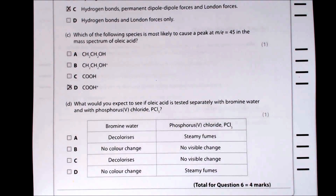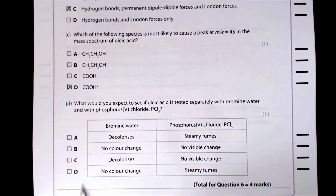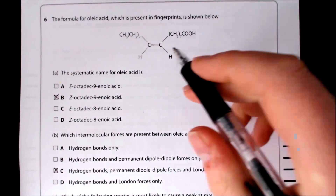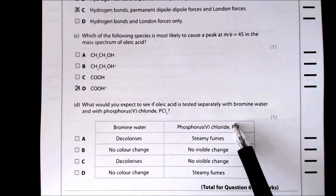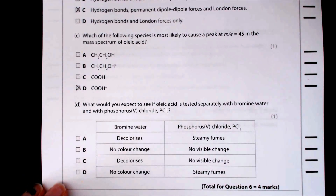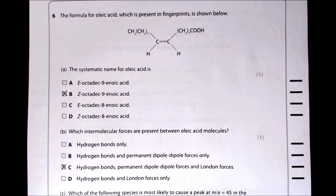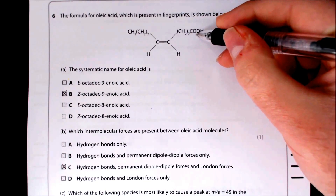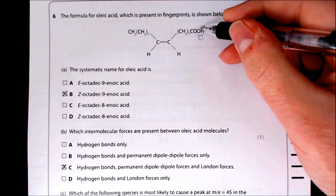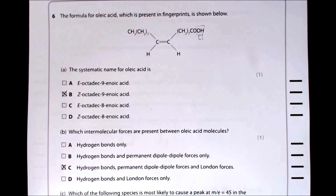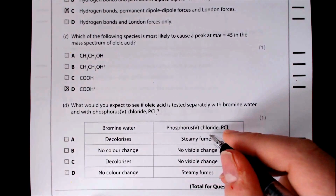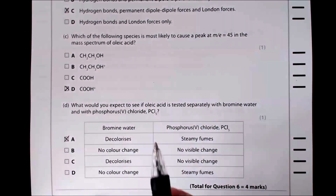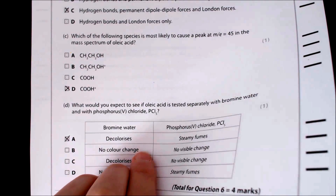Part D: what happens when oleic acid is tested with bromine water and with PCl₅? Oleic acid has a C=C double bond, which decolourises bromine water. PCl₅ reacts with the OH group of the carboxylic acid, replacing it with Cl and producing steamy/misty fumes of HCl. So the observations are bromine decolourised and steamy fumes with PCl₅ — the answer is A.